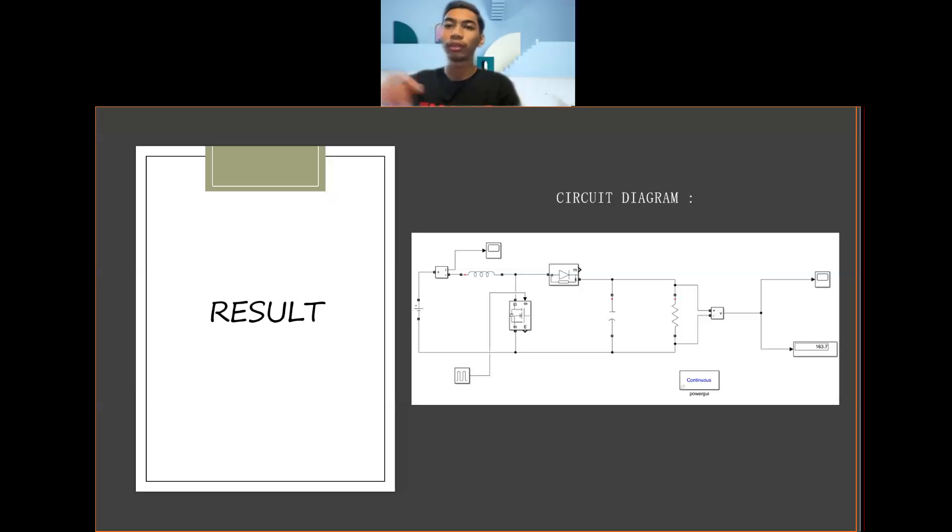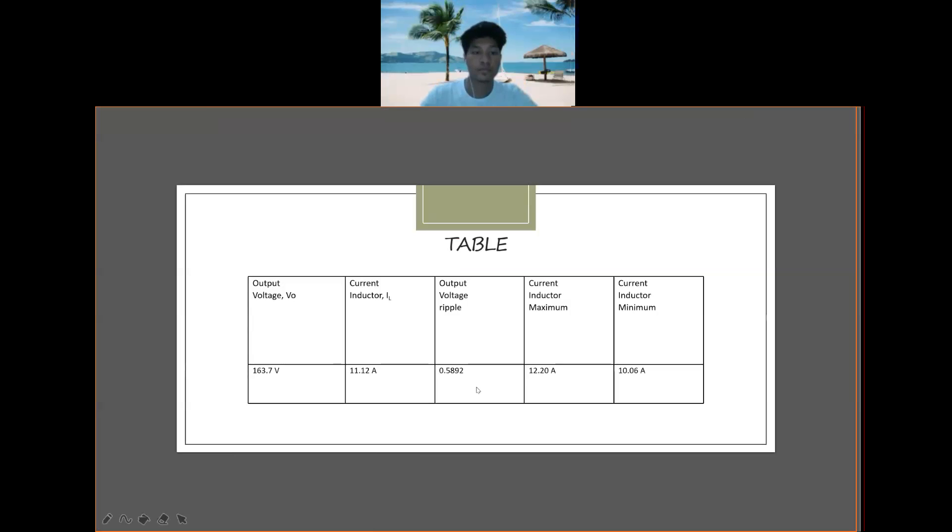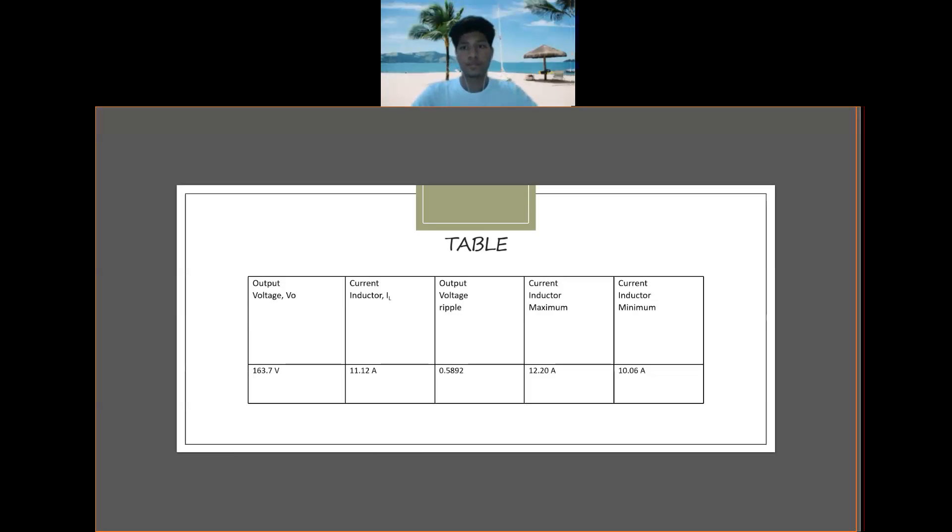For the circuit, we simulate for two seconds and we can get waveforms. We get two waveforms: first we get voltage output and current inductor. From the waveform we get the output voltage, the value is 163.7 volt. Next, current inductor we get 114. And for the output voltage ripple we get 0.5892. For the current inductor maximum we get 12.20 ampere. And the last, current inductor minimum we get 10.06 ampere.